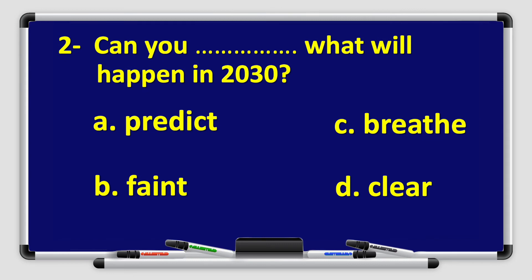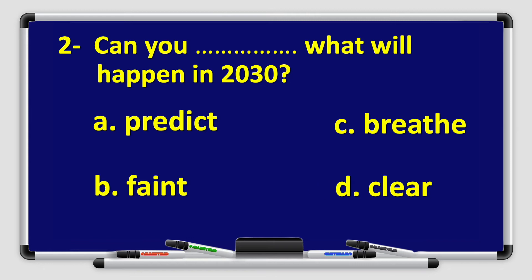Question number two: can you ___ what will happen in 2030? A. Predict, B. Faint, C. Breathe, D. Clear. Excellent — can you predict what will happen in 2030?